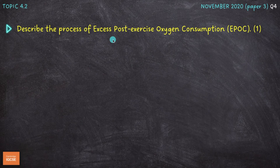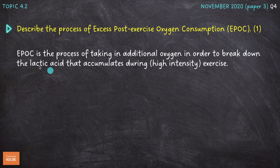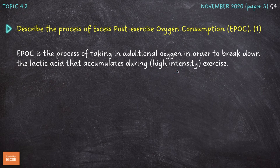Next question: describe the process of excess post-exercise oxygen consumption, or EPOC, for one mark. EPOC is the process of taking in additional oxygen in order to break down the lactic acid that accumulates during high-intensity exercise. It's anaerobic respiration that causes lactic acid to be produced and accumulate, and we break down that lactic acid using oxygen. When we stop exercising, our breathing rate, depth of breaths, and heart rate remain elevated for some time as the body works to remove the accumulated lactic acid.